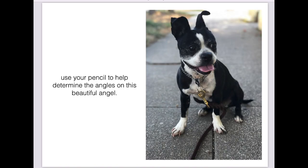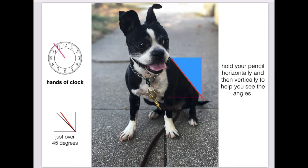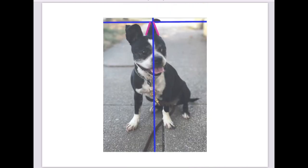So use your pencil to determine the angles of this beautiful angel - this is my dog if you haven't figured that out. Okay, so if I were to measure the angle of her back in terms of hands on a clock, it would be just about before 11 o'clock, right, just over 45 degrees. And I could do the same thing to